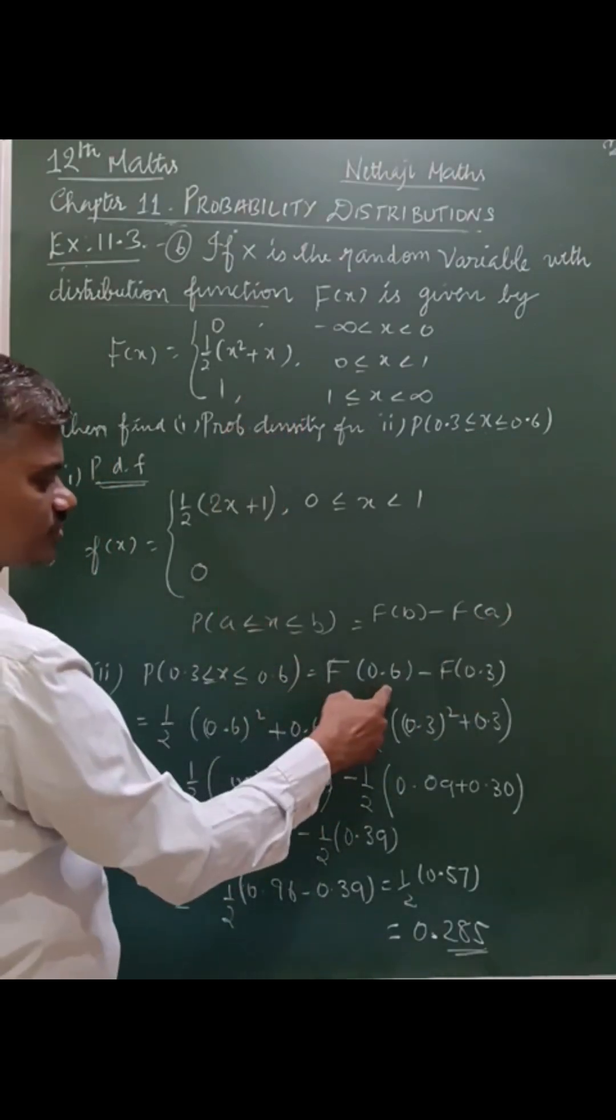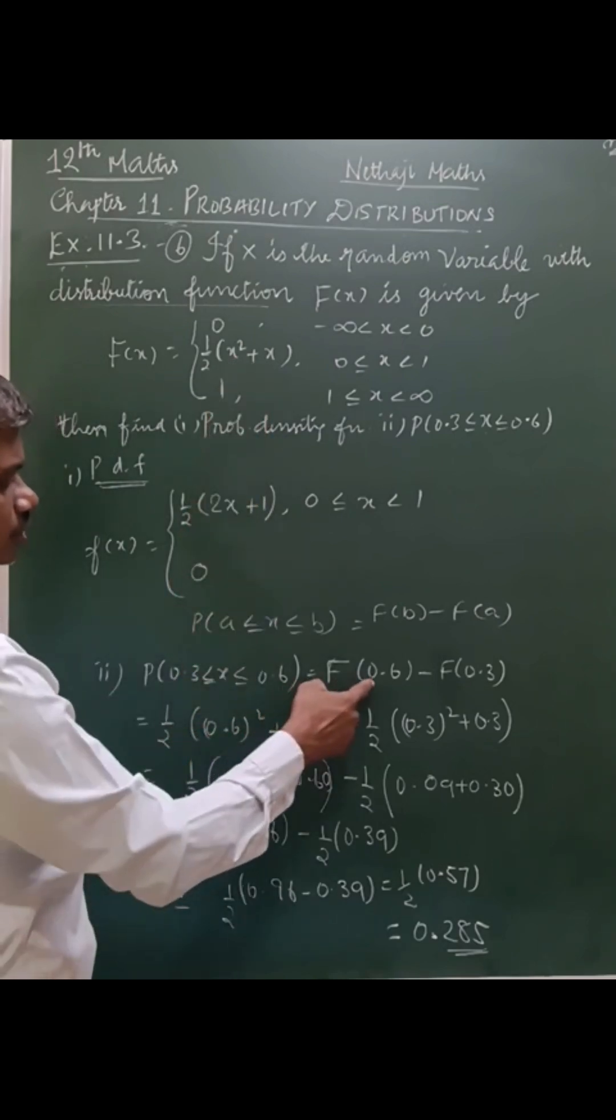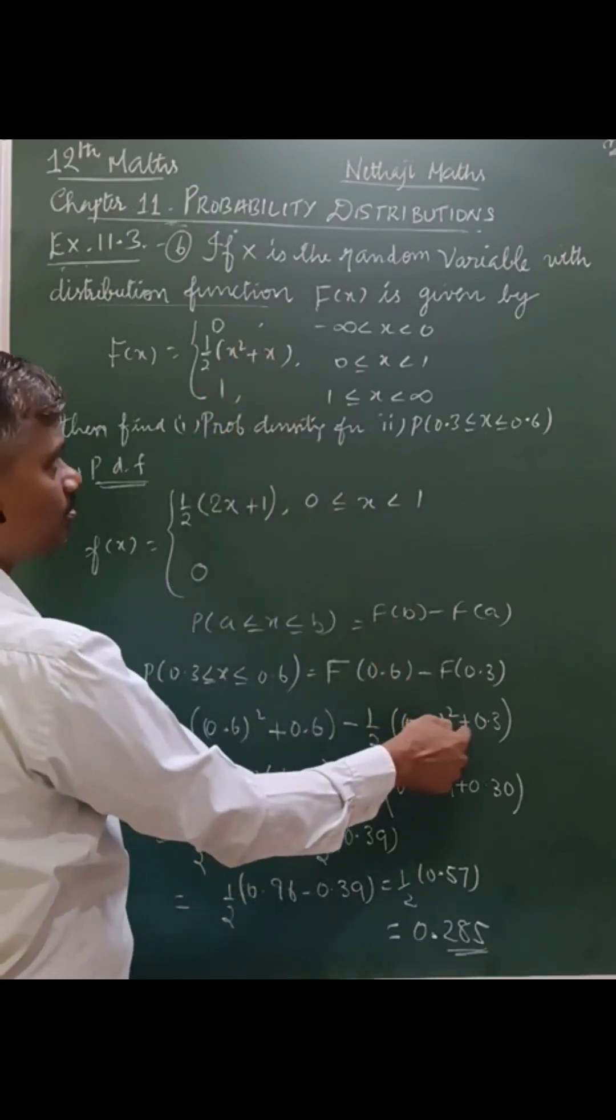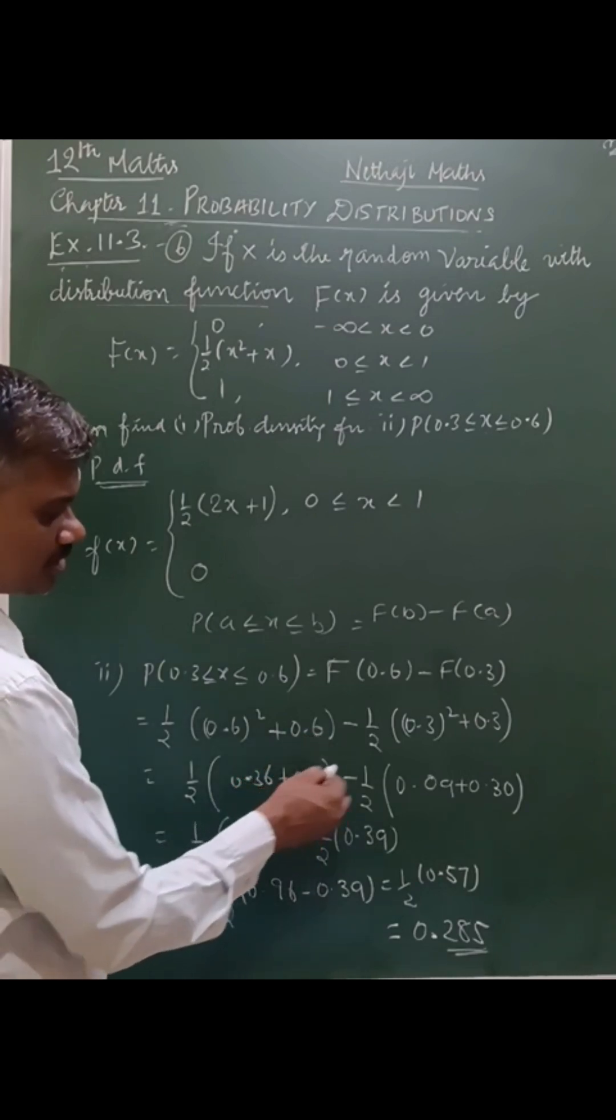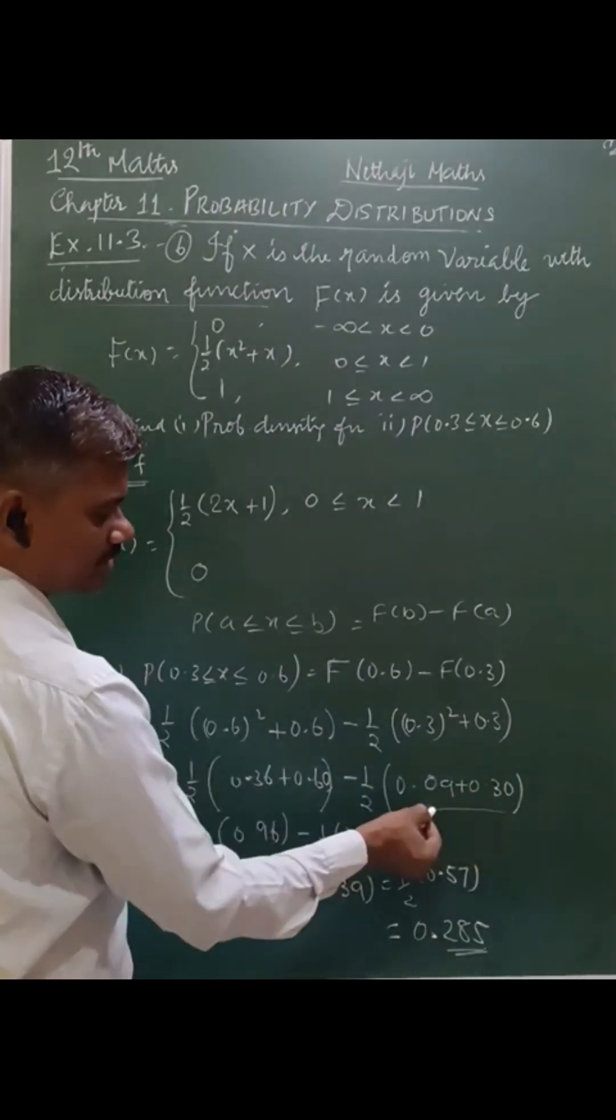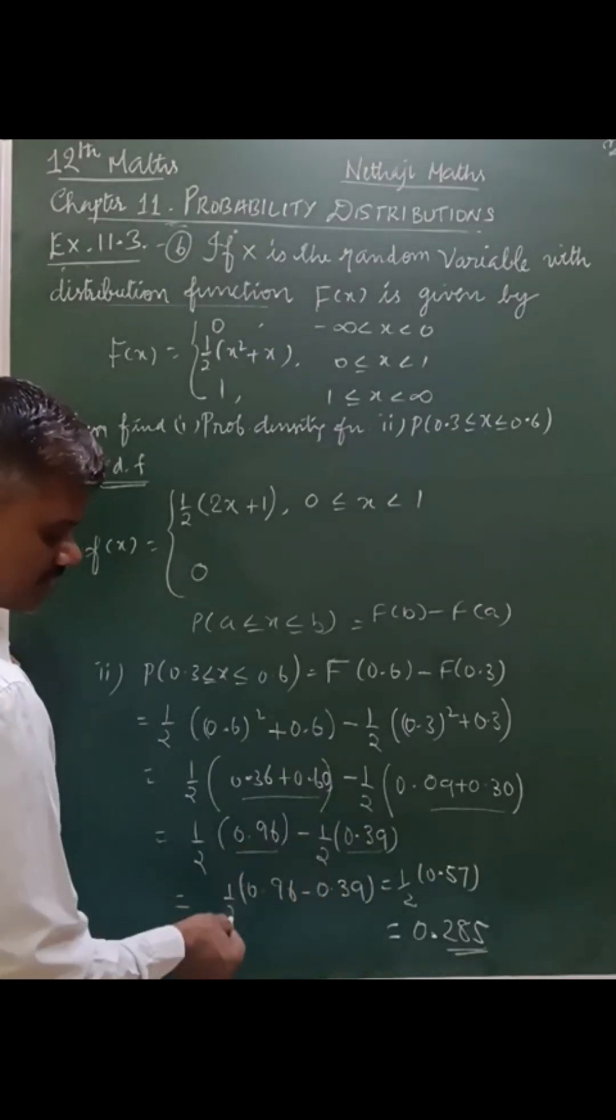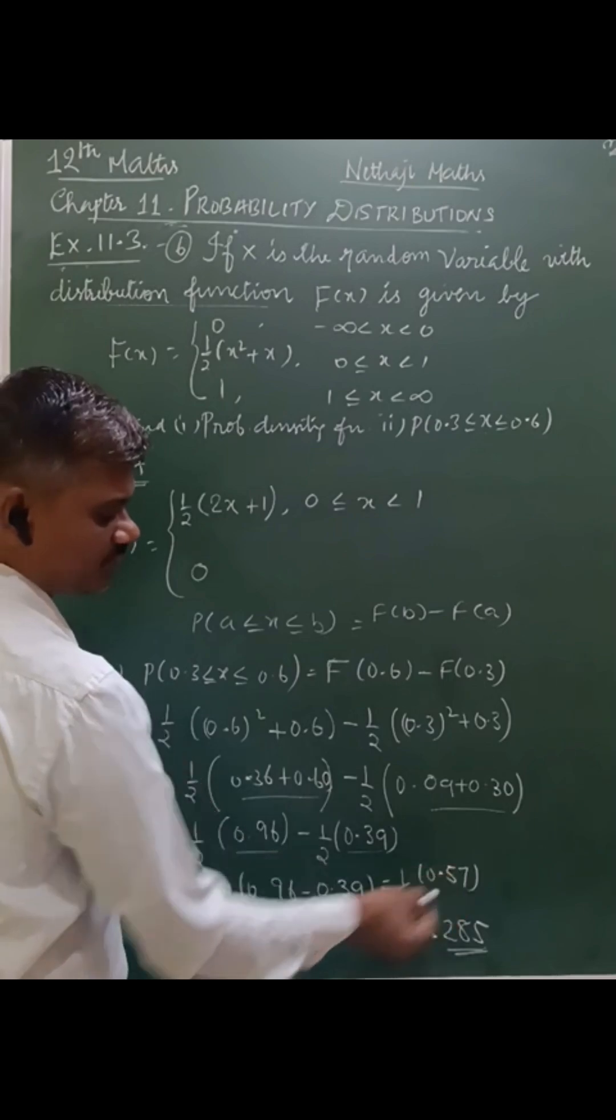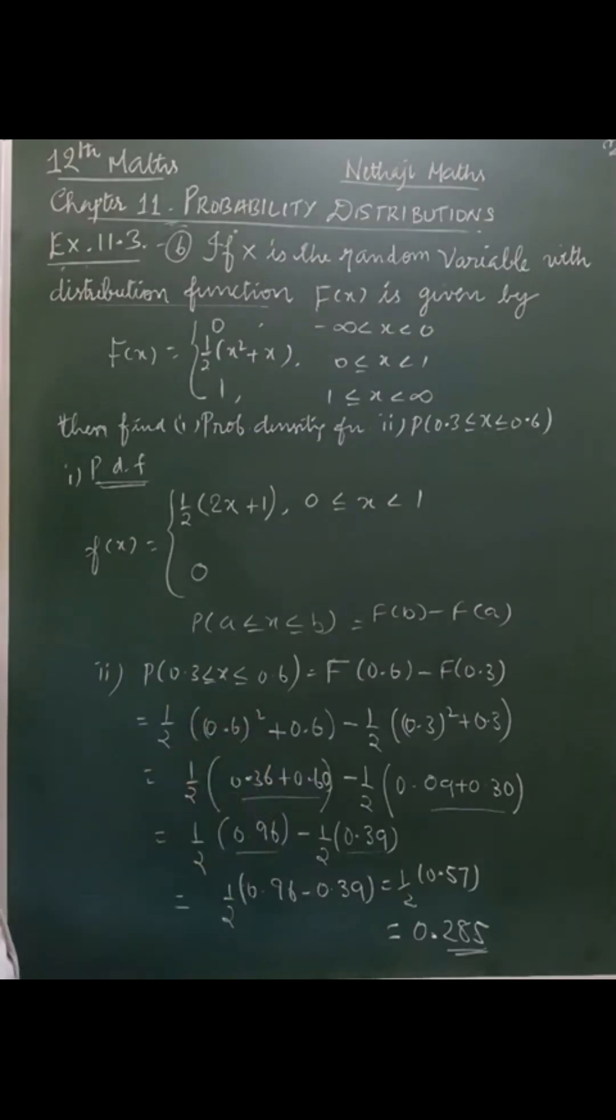Simplifying this, half times 0.6 squared is 0.36, plus 0.6 gives 0.96. Half times 0.3 squared is 0.09, plus 0.3 gives 0.39. Taking half as common, we get half times (0.96 minus 0.39), which equals half times 0.57, giving us 0.285. So this is the probability.